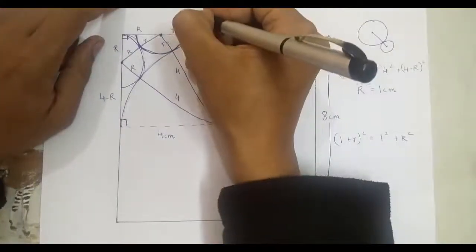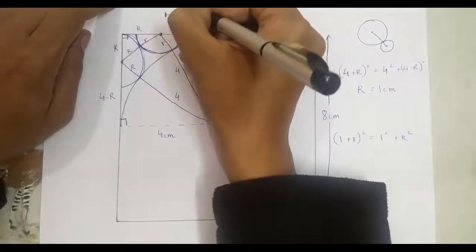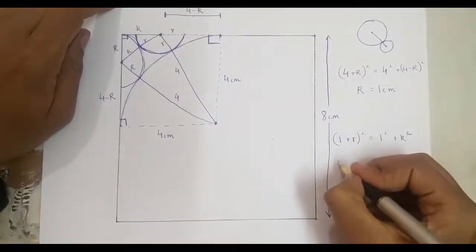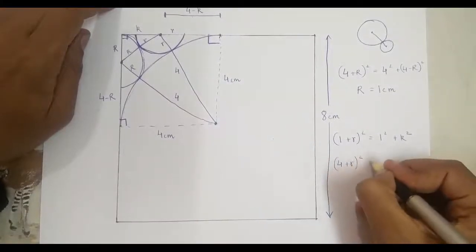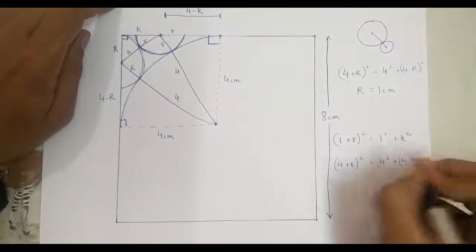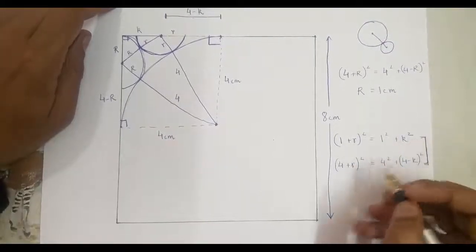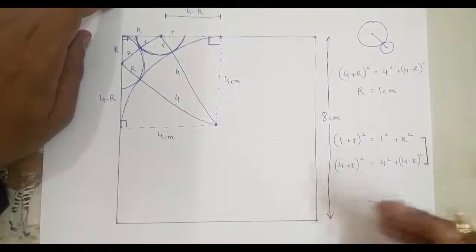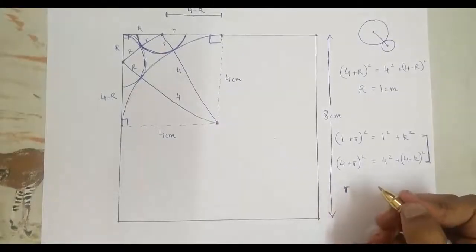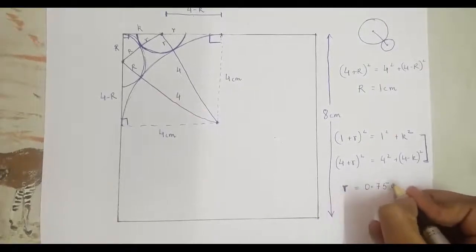Now over here, this remaining length is going to be 4 minus k. Using the Pythagorean theorem in this triangle, you have: 4 plus small r, whole squared, equals 4 squared plus 4 minus k, whole squared. Now you've got two equations, two unknowns. You can solve for k squared, substitute k squared into an equation that only has k squared and r squared, where you would finally end up with r equal to approximately 0.75069.